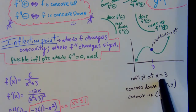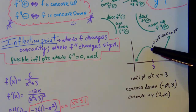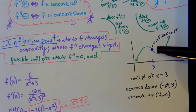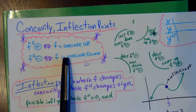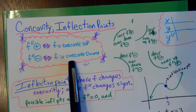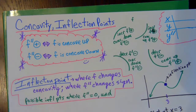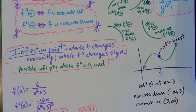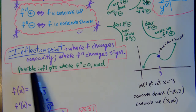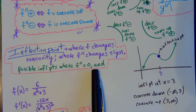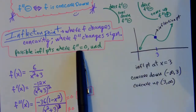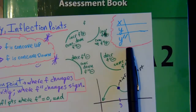From x = 3 to infinity, the original curve is concave up, meaning the second derivative is positive there. This relationship works both ways: if you know the graph's concavity, you can determine the sign of the second derivative. Just like finding possible max and mins by setting the first derivative to zero or undefined, we find possible inflection points by setting the second derivative to zero or undefined.